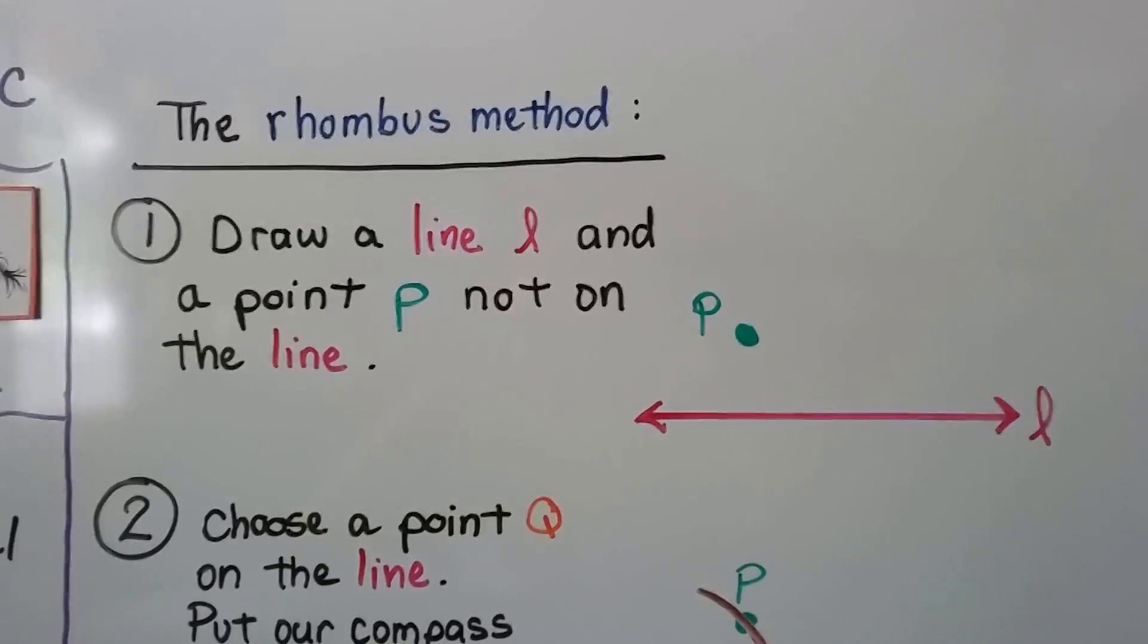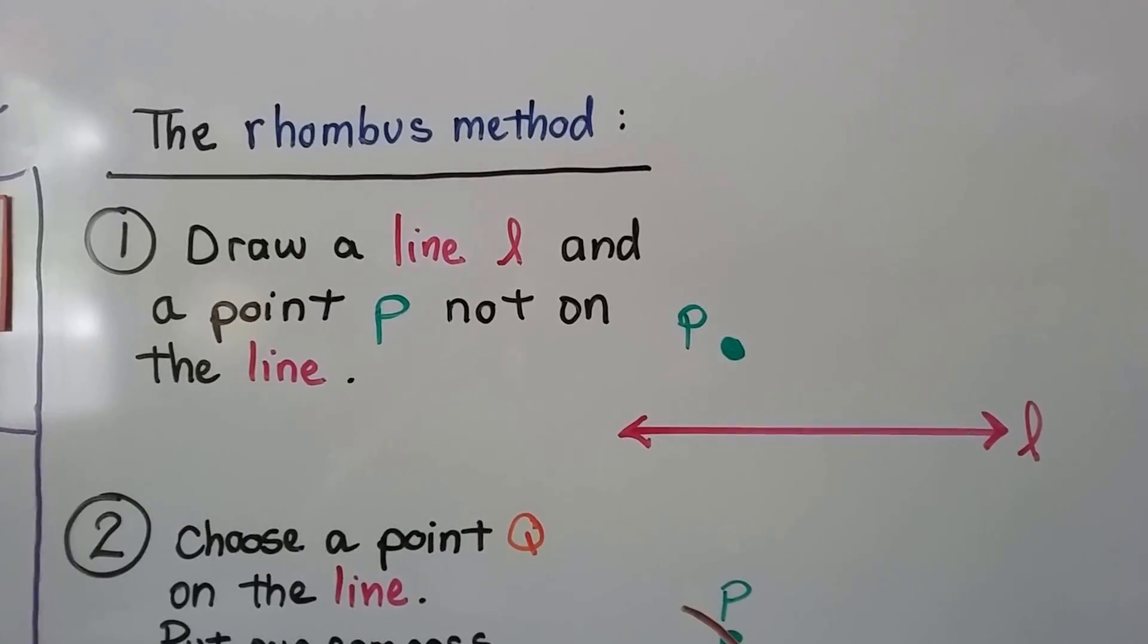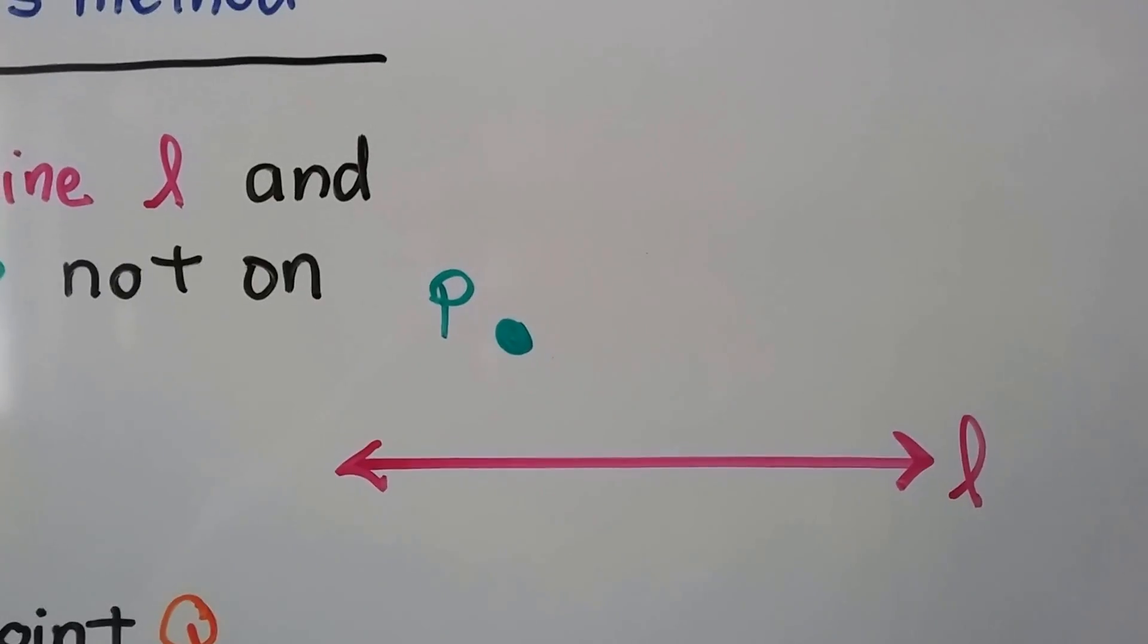The first thing we do is draw a line L and a point P not on the line. So you can see we've got line L and we've got point P that's not on the line.